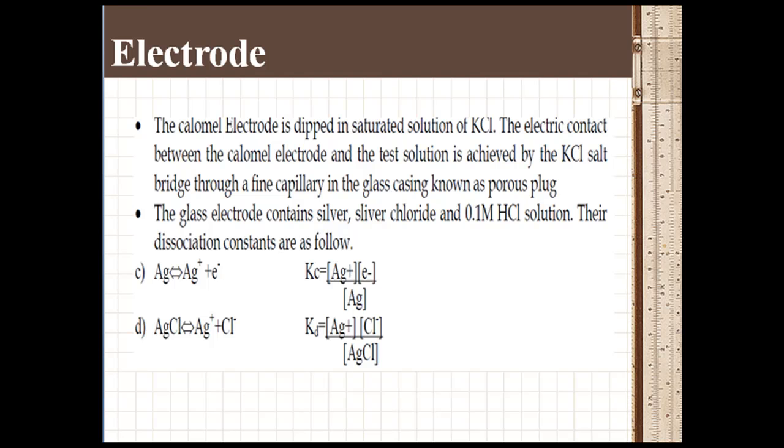The glass electrode contains silver, silver chloride, and 0.1 molar HCl solution. The dissociation constants are as given in the slide. This electrode is dipped in 0.1 molar HCl solution.